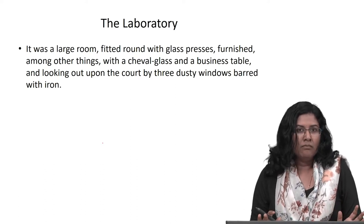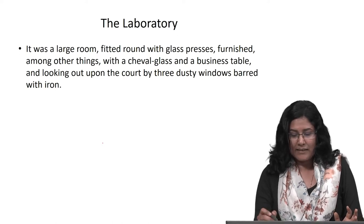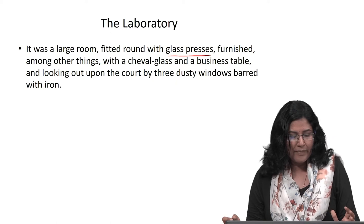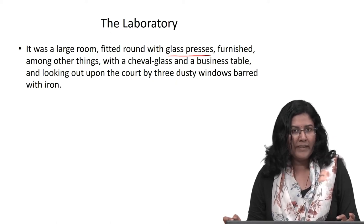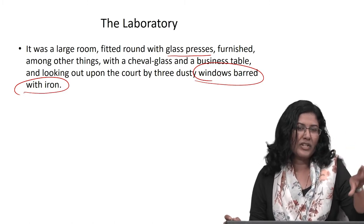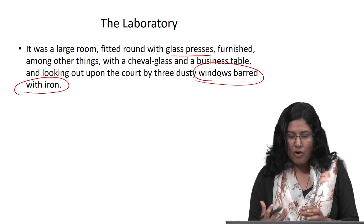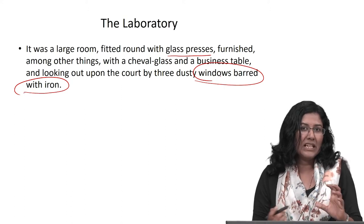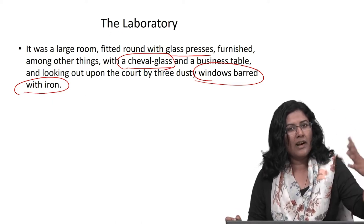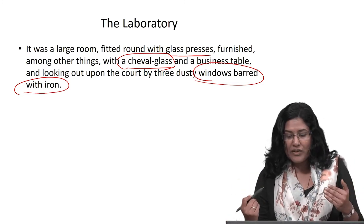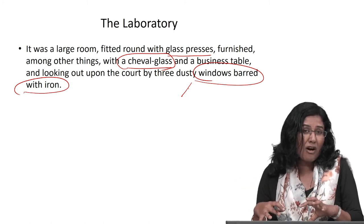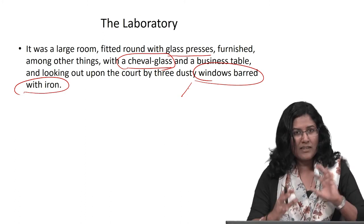The lab is a large room fitted around with glass presses — glass cabinets and cupboards — furnished with a cheval glass and a business table, and looking out upon the courtyard by three dusty windows barred with iron. The dusty windows indicate that nobody is coming into the room regularly; it is a very private space, even though it is associated with something public like scientific knowledge.